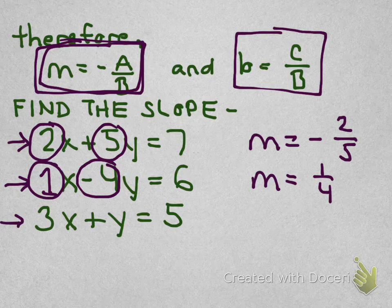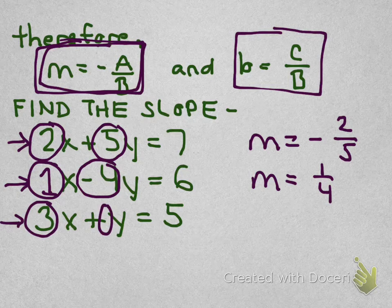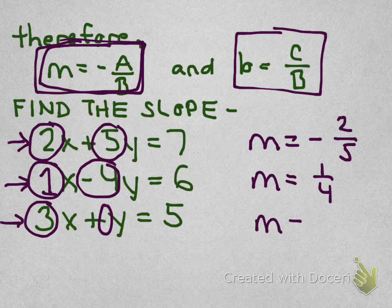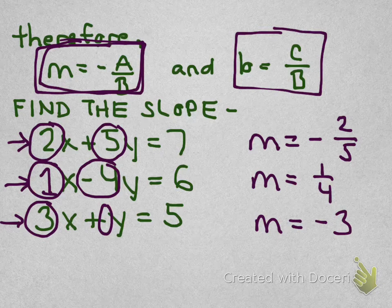How about this third one? We have an A of 3, a B of 1, implied 1 here, 3 over 1, we want the opposite. The slope of that line is negative 3. So you don't have to convert to slope-intercept form all the time if you understand the opposite of A over B.